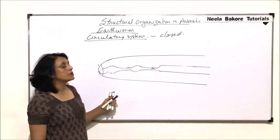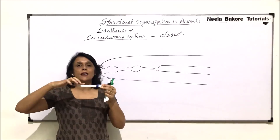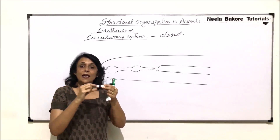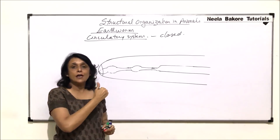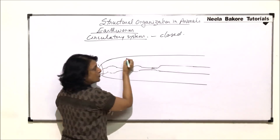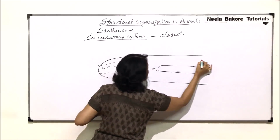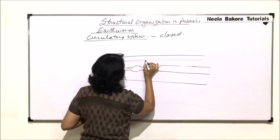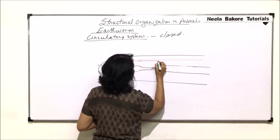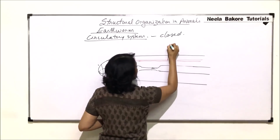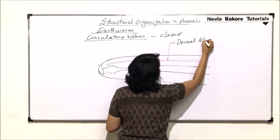There is a blood vessel on the dorsal side, meaning above the alimentary canal. The top side of the worm is called the dorsal side. Above the alimentary canal, there is a dorsal vessel. The dorsal vessel runs from the posterior side and comes towards the anterior side. This is one major blood vessel — the dorsal blood vessel.